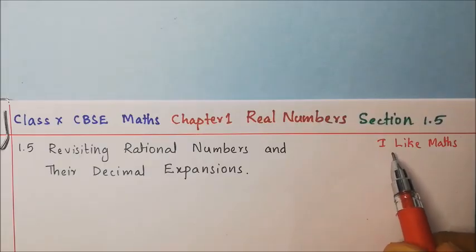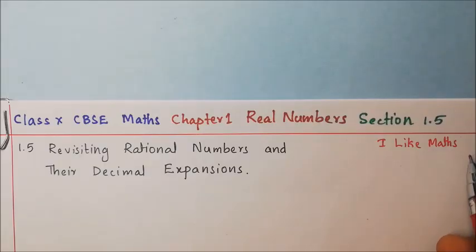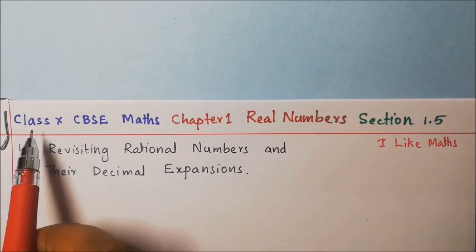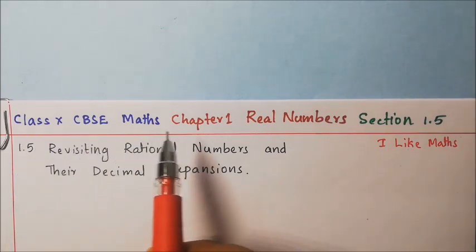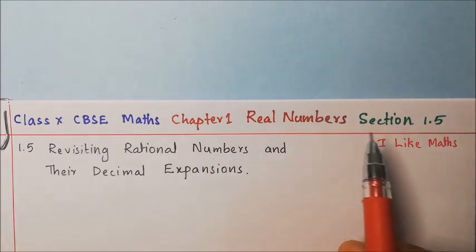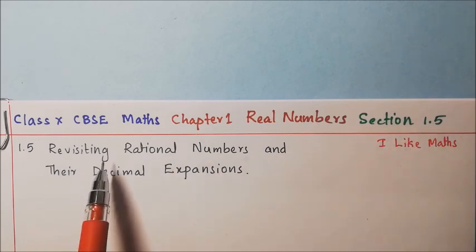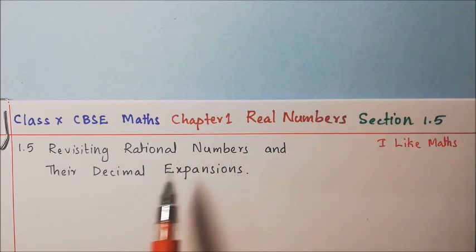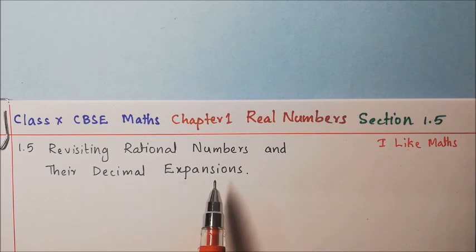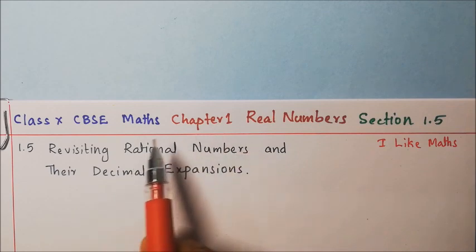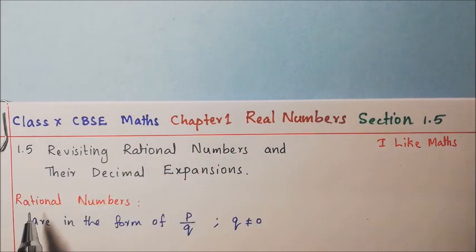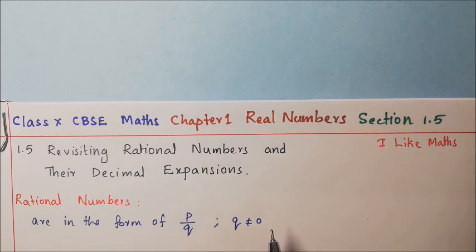Hello friends, welcome to I Like Maths. Today we are going to take Class 10 CBSE Maths Chapter 1 Real Numbers, Section 1.5: Revisiting Rational Numbers and Their Decimal Expansions. Rational numbers are in the form of p by q where p and q are integers and q is not equal to 0.